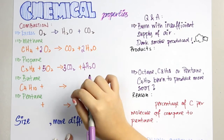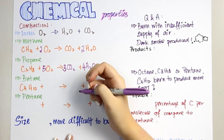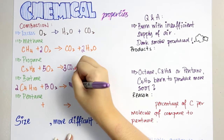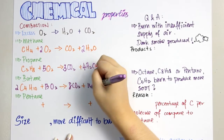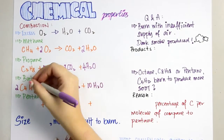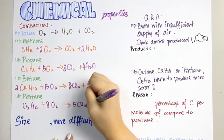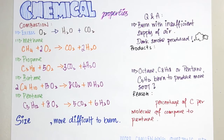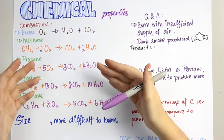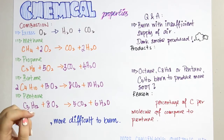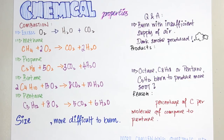You can try balancing butane and pentane on your own and check the answer after you have done so. Here is the answer. As a conclusion, as the size of the alkane compound increases, it is more difficult to burn.